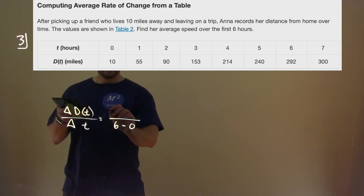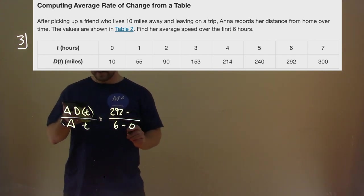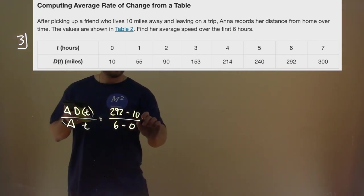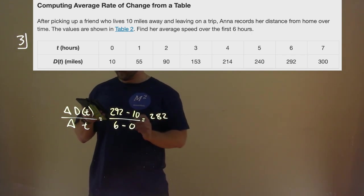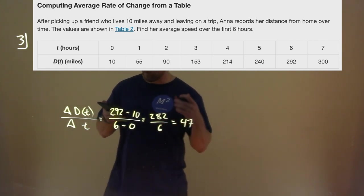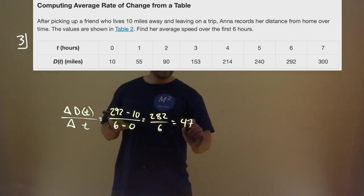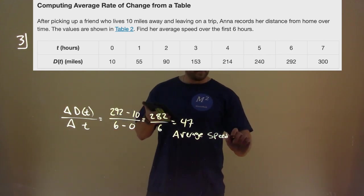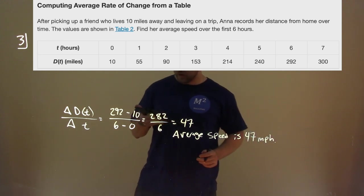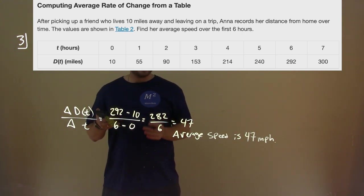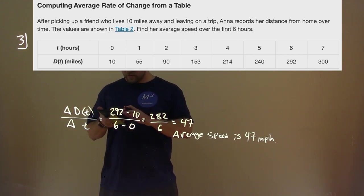At 6 hours the distance is 292 miles, and at 0 hours she starts at 10 miles. So we have 292 minus 10 in the numerator, and 6 minus 0 equals 6 in the denominator. That gives us 282 divided by 6, which is 47. Her average speed over the first 6 hours is 47 miles per hour.